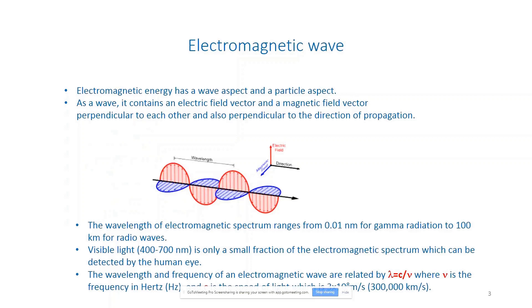Let's start with the electromagnetic wave. Electromagnetic energy has both a wave aspect and a particle aspect. As a wave, it has an electric vector and a magnetic vector, shown by red and blue arrows, and the direction of propagation is perpendicular to both vectors. Electromagnetic radiation comes in different wavelengths, ranging from 0.01 nanometers for gamma radiation to about 100 kilometers for radio waves.